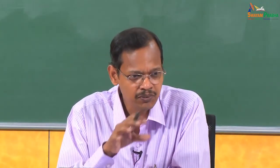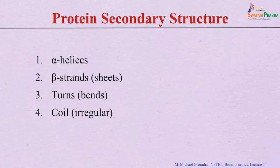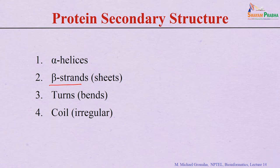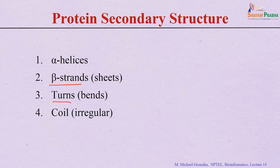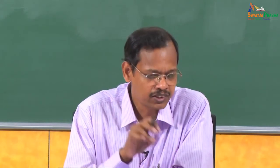Based on the regular arrangement of residues, there are different types of secondary structures. The commonly occurring ones are: alpha helices — identified first, named using the first Greek letter alpha; beta strands, where strands join together to form sheets; turns or bends, which change the direction of the chain; and irregular structures called coils. The regular secondary structures are simplified to alpha helices and beta sheets, along with turns and coils.